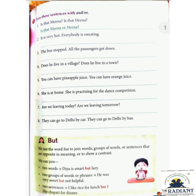Now children, page number 77 in the grammar textbook, Exercise A: Join these sentences with 'and' or 'or'. Here only use 'and' or 'or'. Number 1 is already done: 'Is that Mina or Hina?' Number 2: 'It is very hot. Everybody is sweating.' The answer is: 'It is very hot and everybody is sweating.'